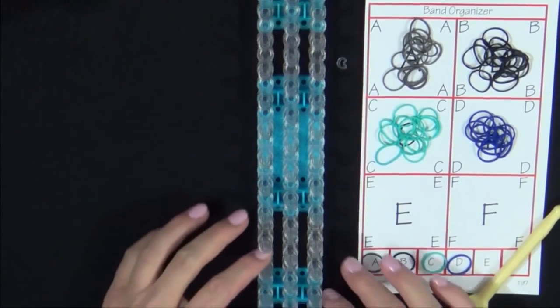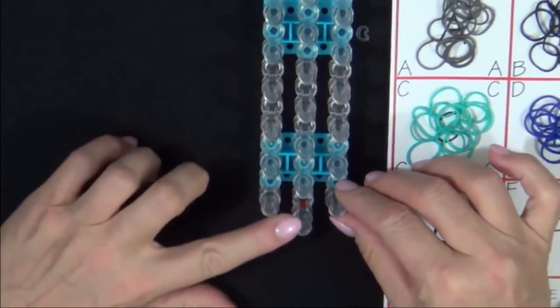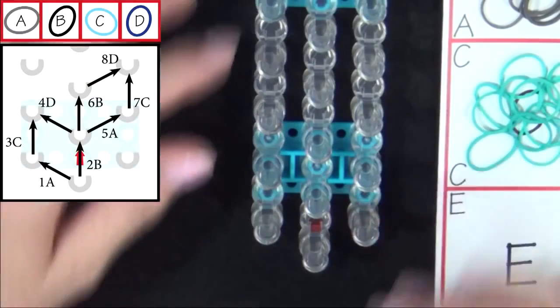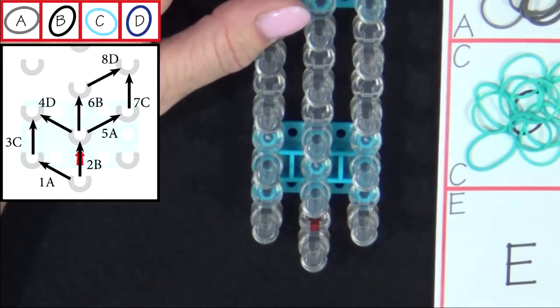Now, let's get started. Place your loom so that the red arrow is pointing away from you. Refer to the diagram on the screen as we place the first 8 bands.